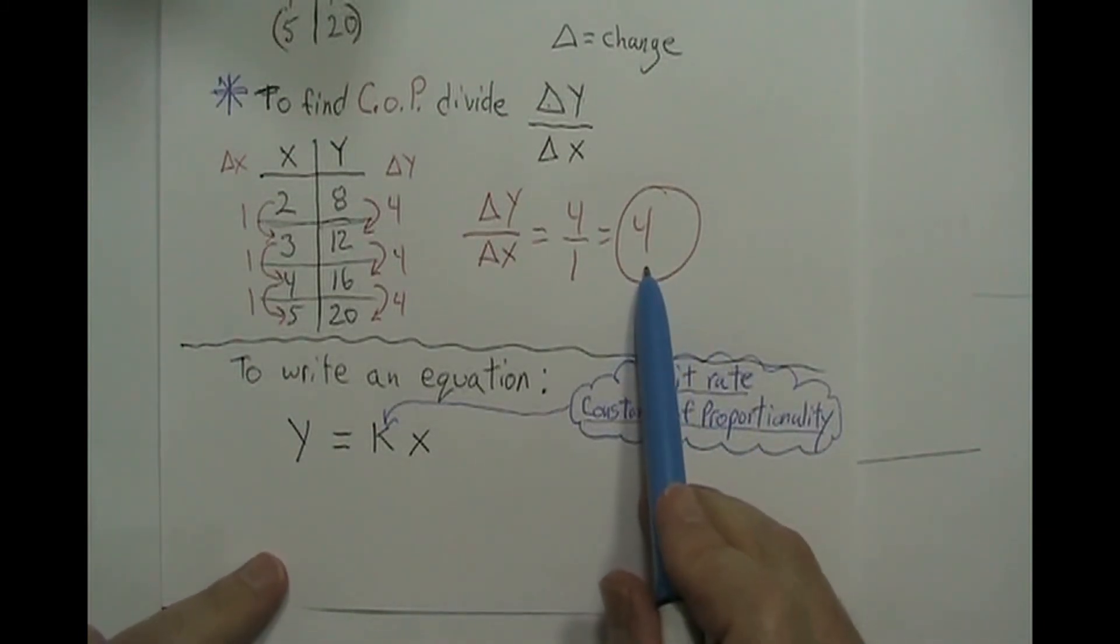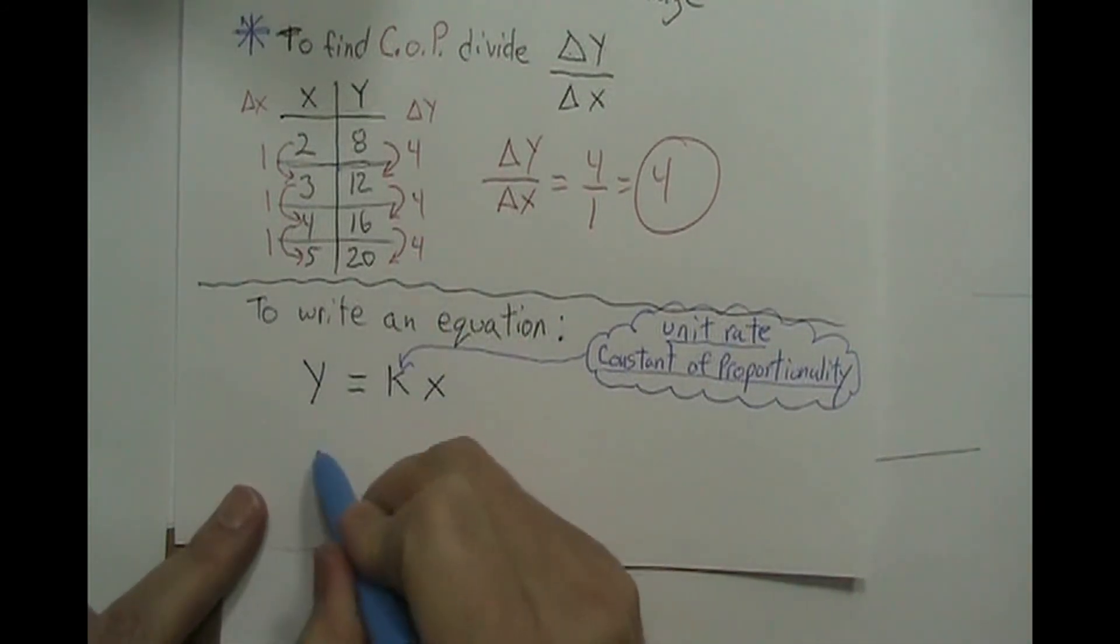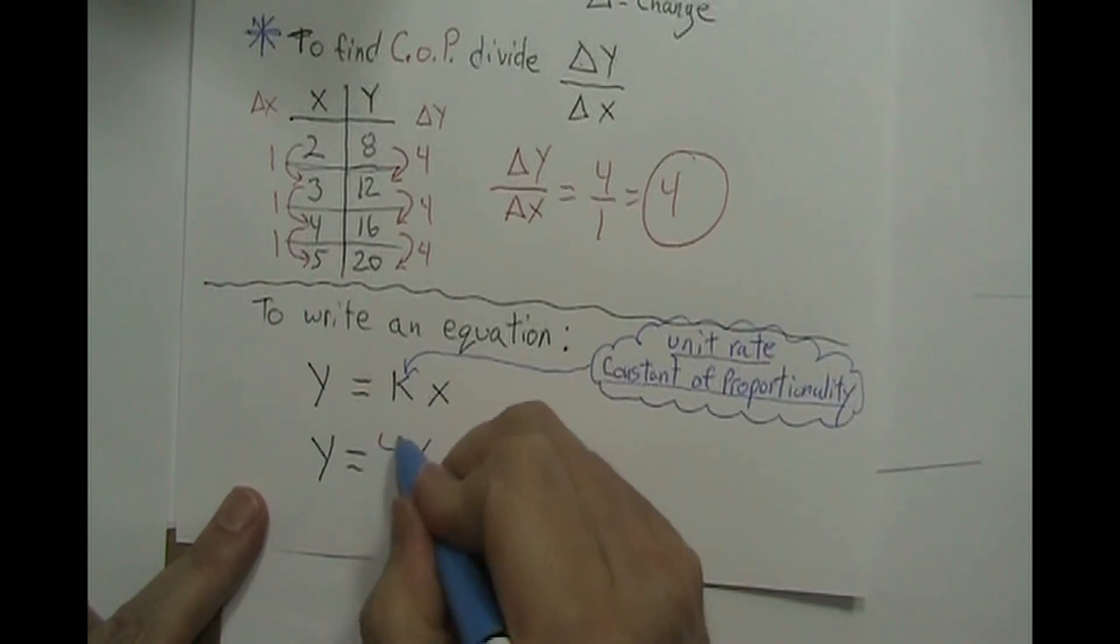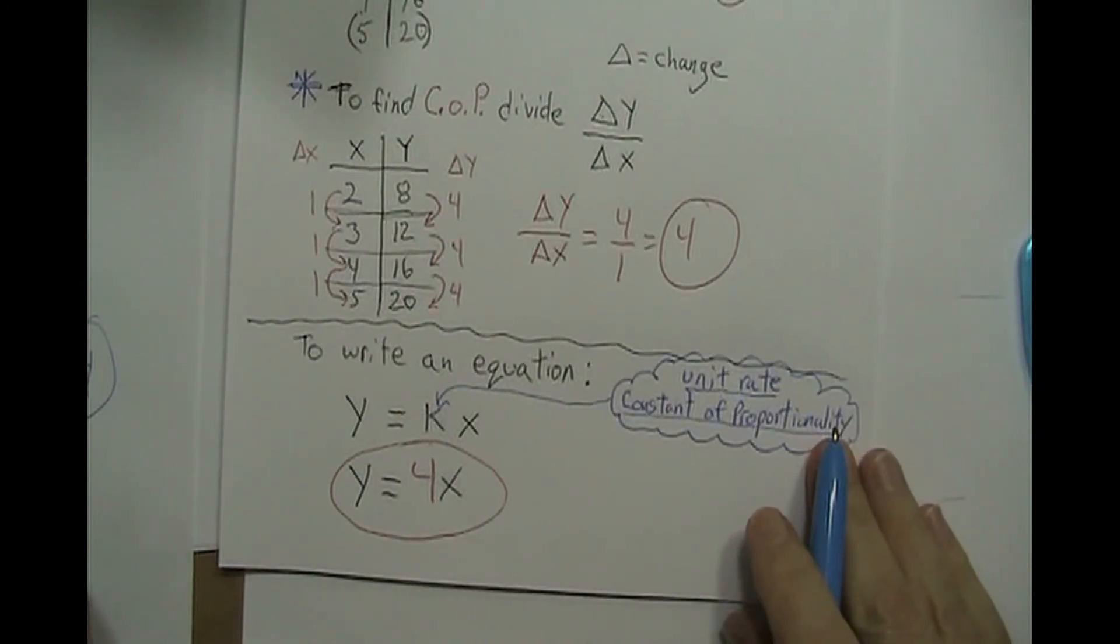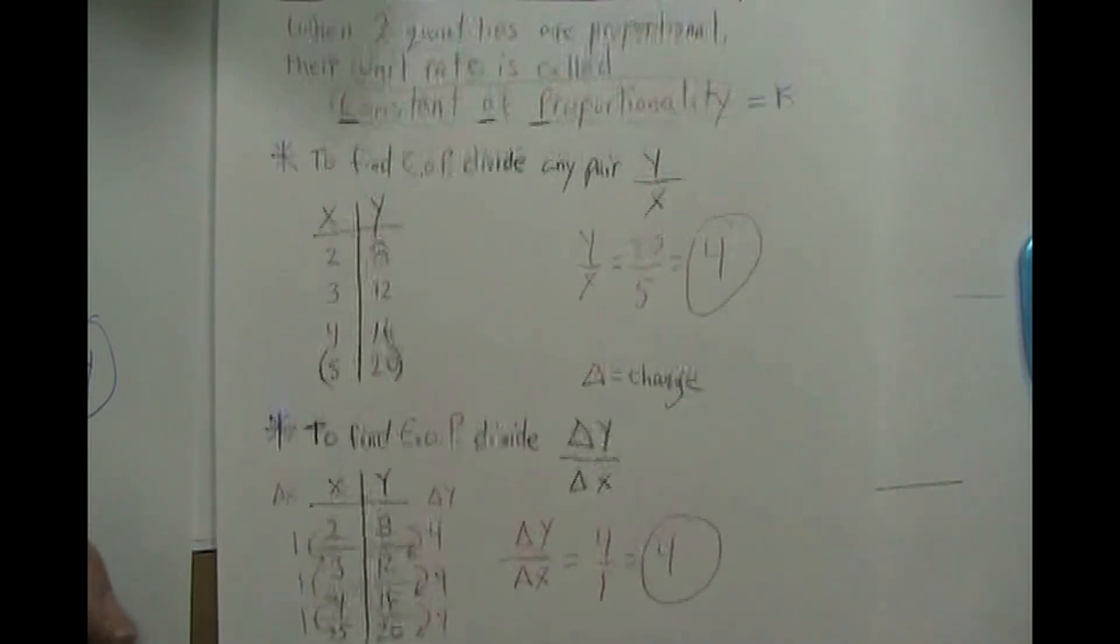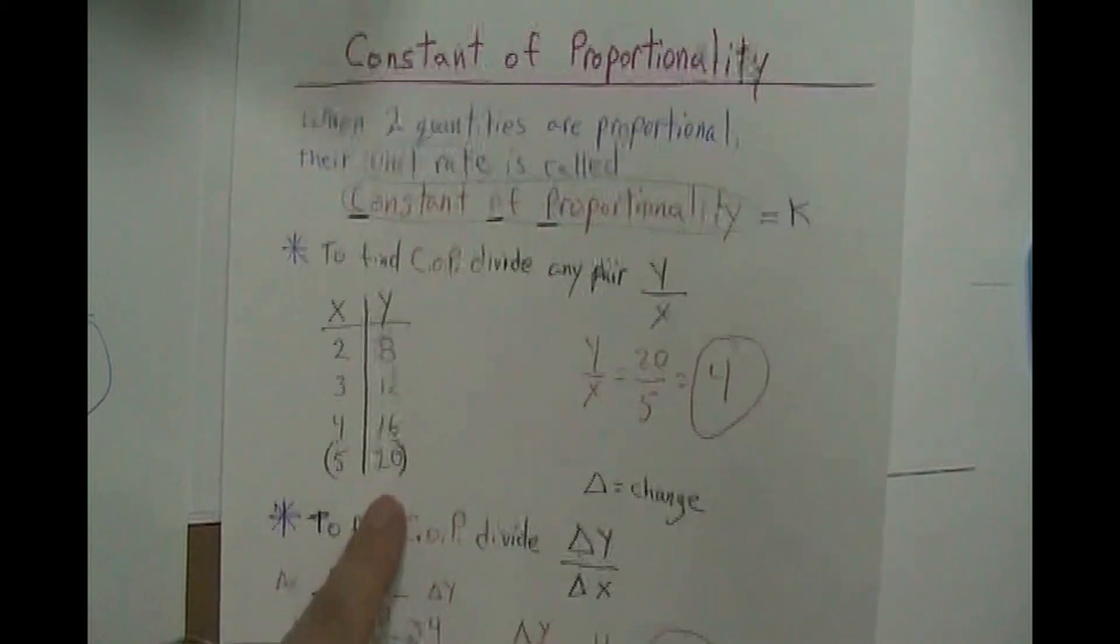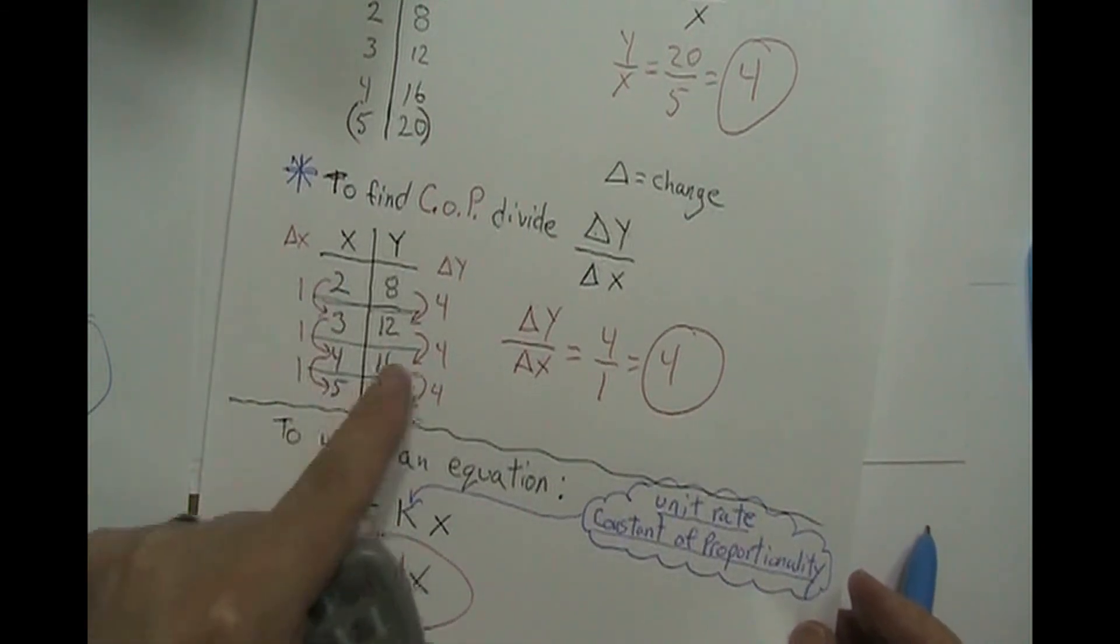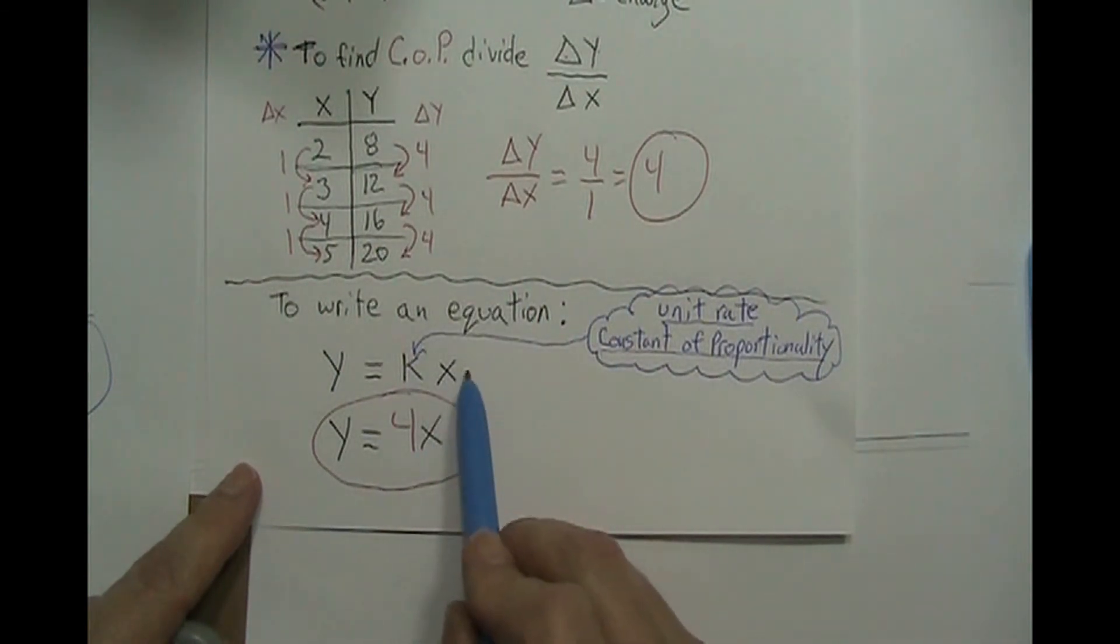So looking above, that number was 4, wasn't it? Right? The constant of proportionality, the unit rate was 4. So in our equation, for that, we would say y equals 4 goes right there, 4x. That is the equation for that data that's above. So just backing up a little bit, what are we doing here? We're finding constant of proportionality, also known as unit rate. How do we do it? You can divide any y over x, any one, or you can find the change, how much is it changing, y over x. And to write an equation, you just say y equals whatever that number is, x. And that is the equation.